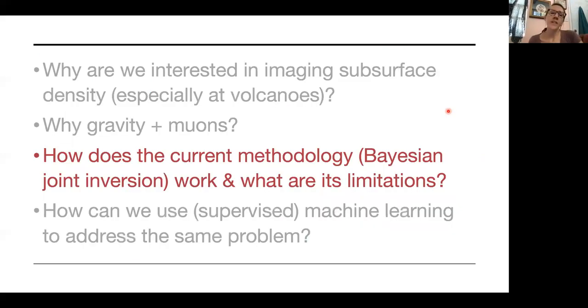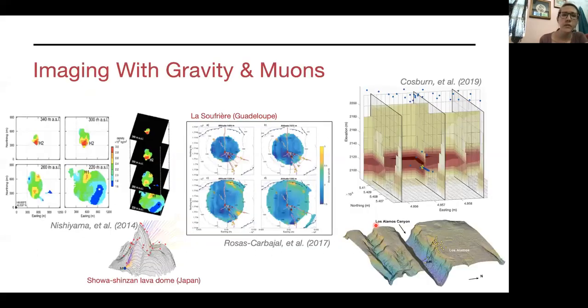And what's nice is that, as I said earlier, this energy loss per unit length is linearly proportional to density. And we just write that in this forward calculation here. Okay, so next question. I sort of touched on the current methodology. I talked about those three studies that were done using gravity and muons for subsurface imaging. Those all use Bayesian joint inversion. And I just wanted to talk just briefly on how those work and what are its limitations, with the idea that eventually I want to motivate this last question here about why are we using supervised machine learning to address the same problem.